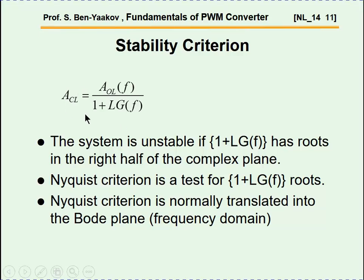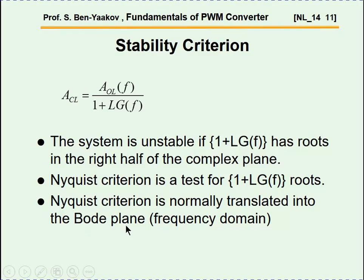Although it's usually defined in different terms, ensuring all poles are in the left half plane is the real reason a system will be stable. We usually do analysis in the frequency domain. The question is: how can we tell if a system has poles in the right half of the complex plane? To do this, we can use the Nyquist criterion. However, the Nyquist criterion is not very user friendly, so we translate it into the Bode plane.